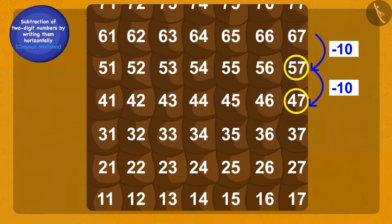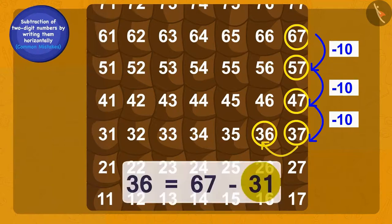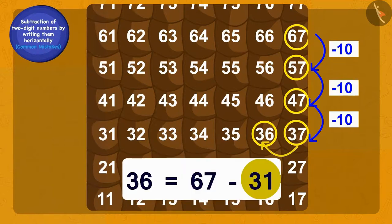Now, he finally took another jump and reached 37 on the grid. Children, now how will we reach 36 from 37? Yes! We have reached 36 by walking one step towards the left. In this way, using the grid, Bholu went 31 steps back from 67 and reached 36.